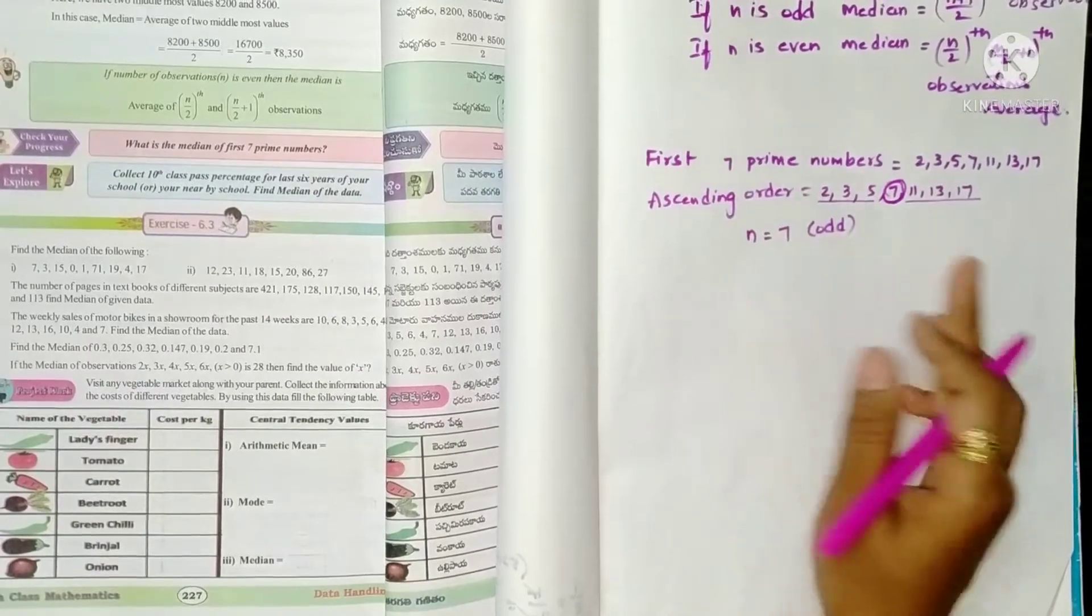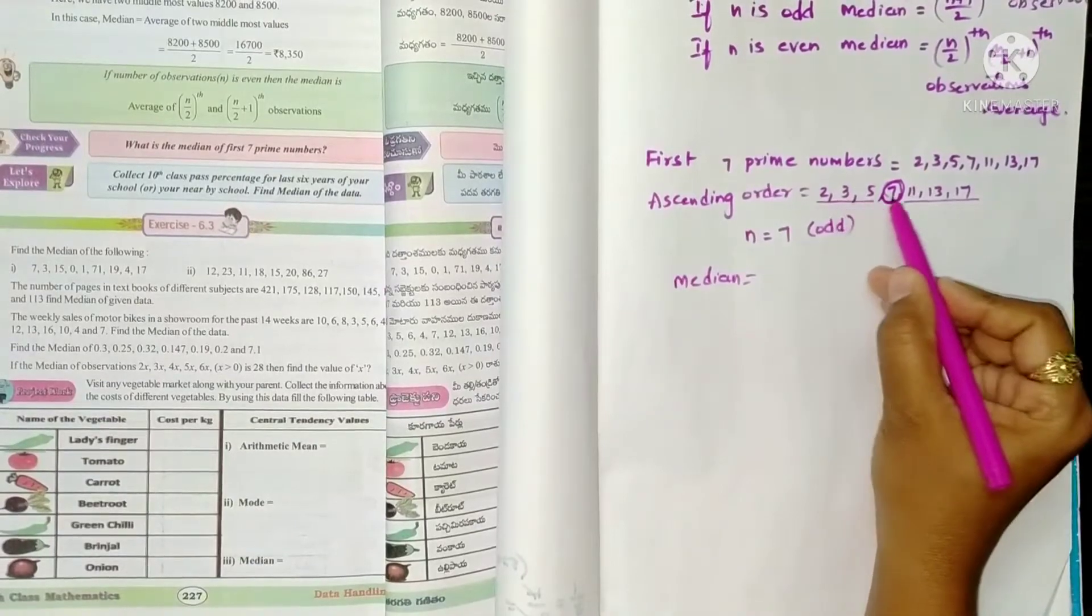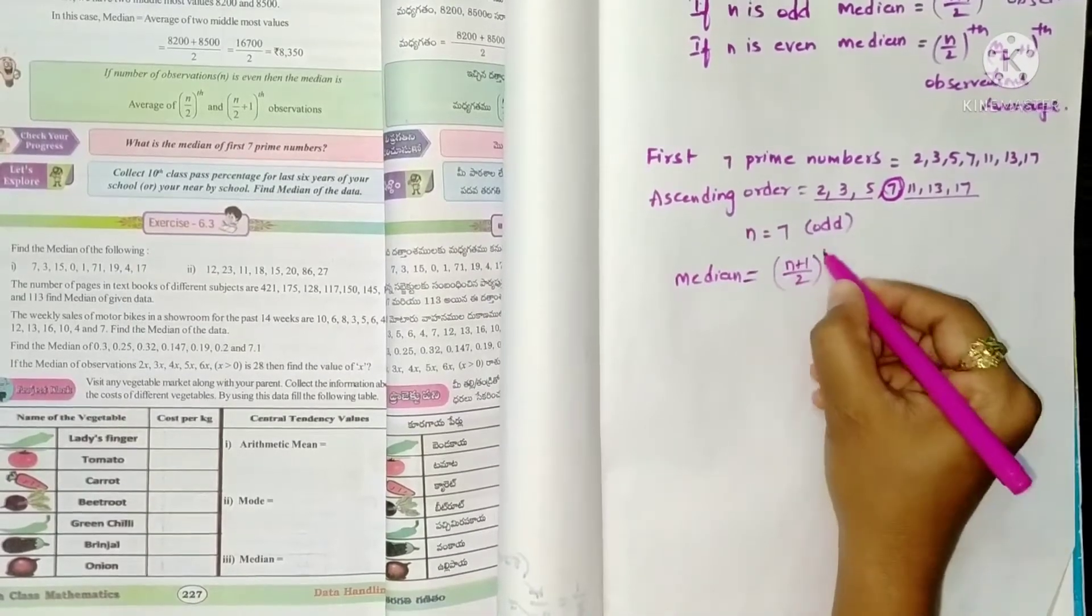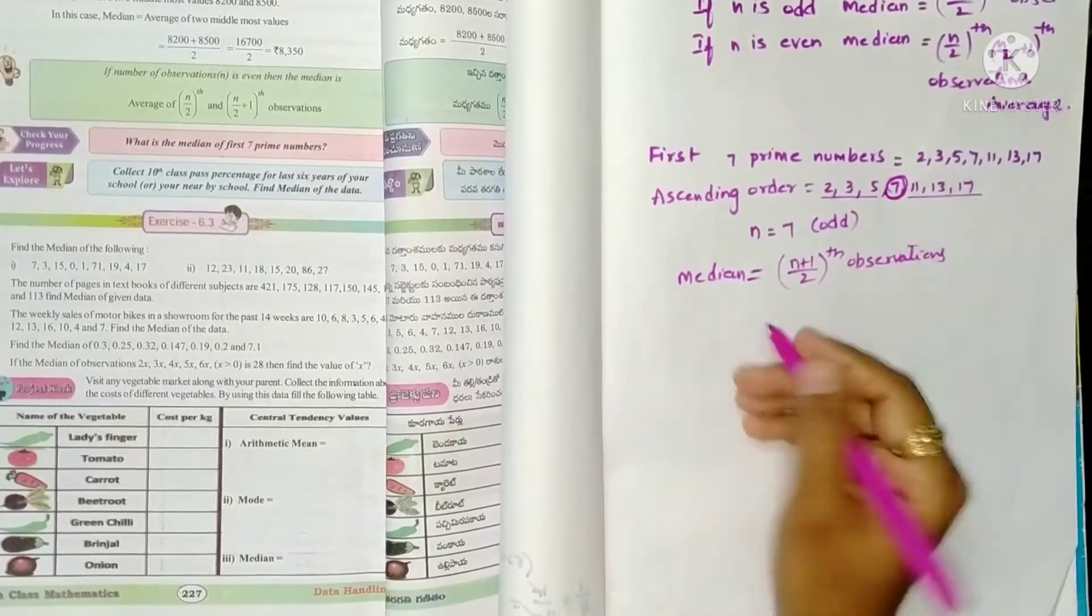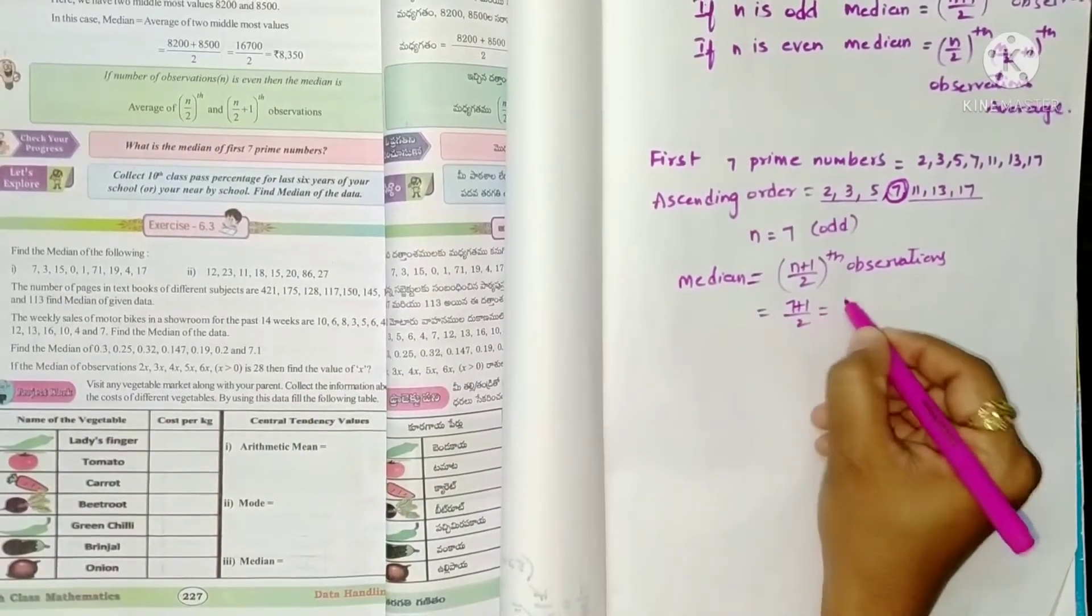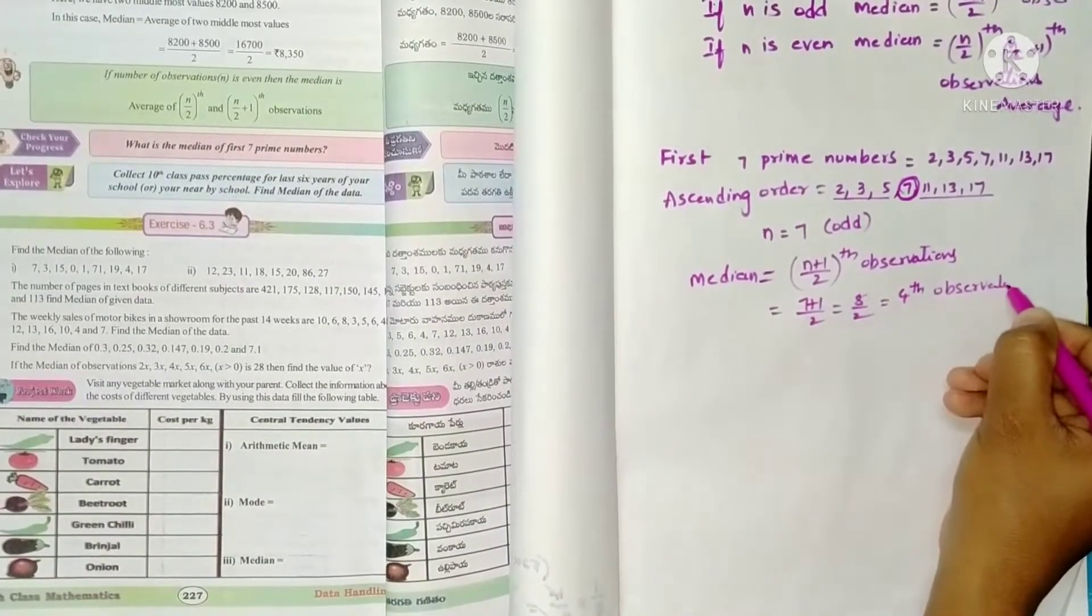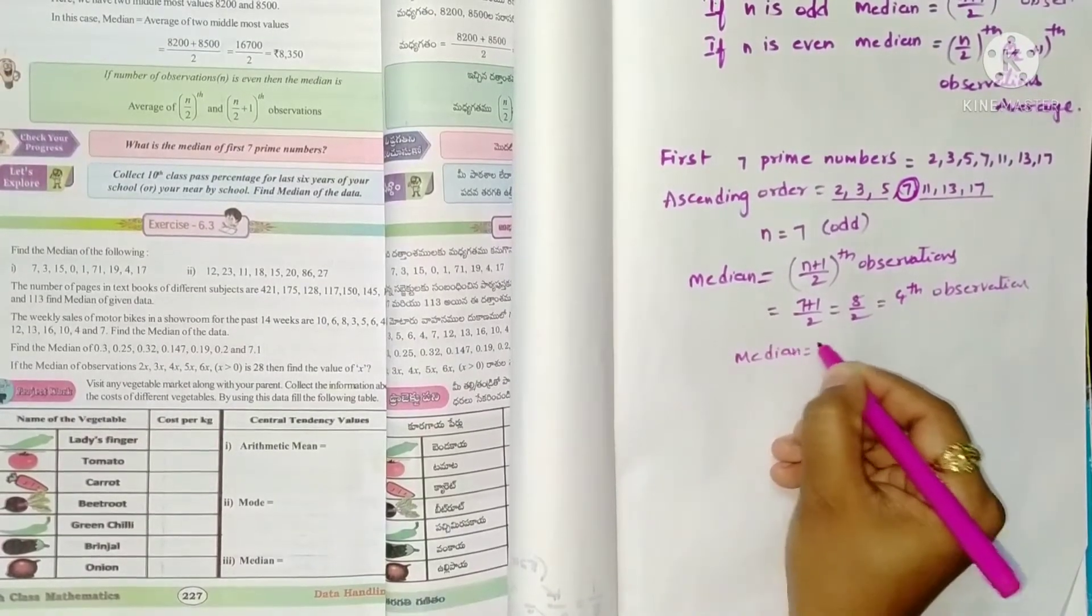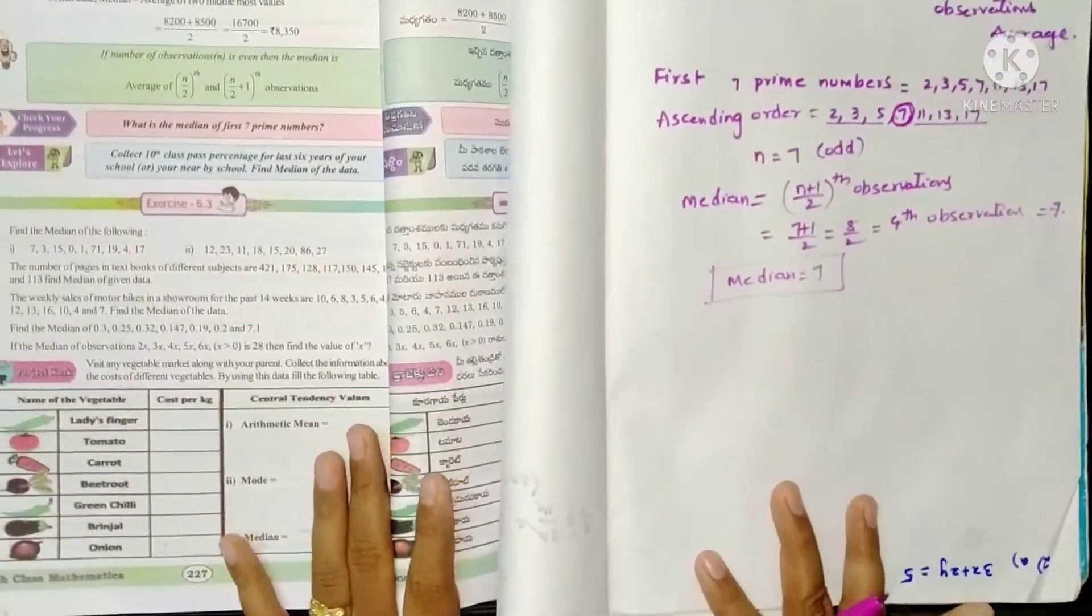So n equals 7, that is odd. What is median? n plus 1 by 2th observation. That is 7 plus 1 by 2, which is 10 by 2, equals 5th observation. The 5th observation is 7. So therefore median is 7.